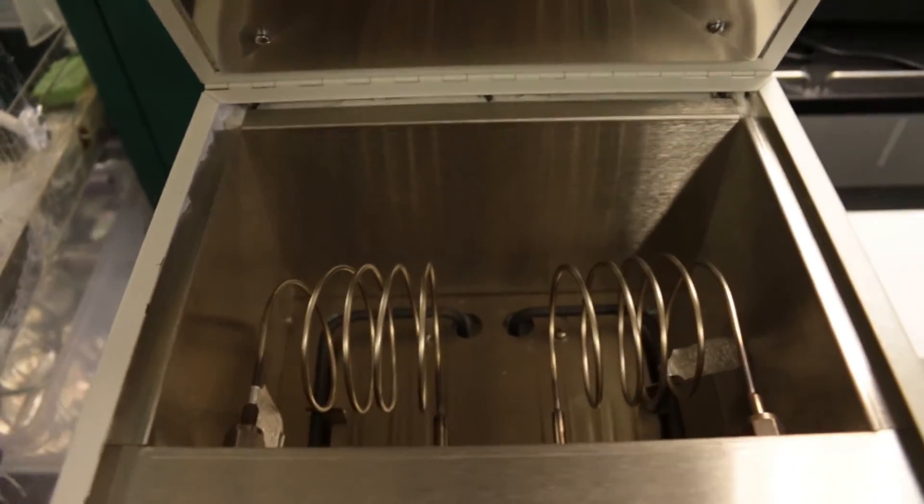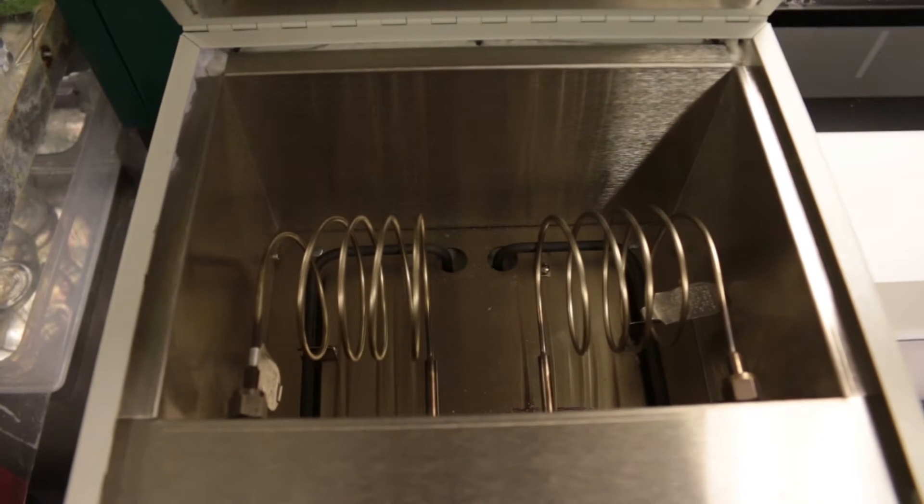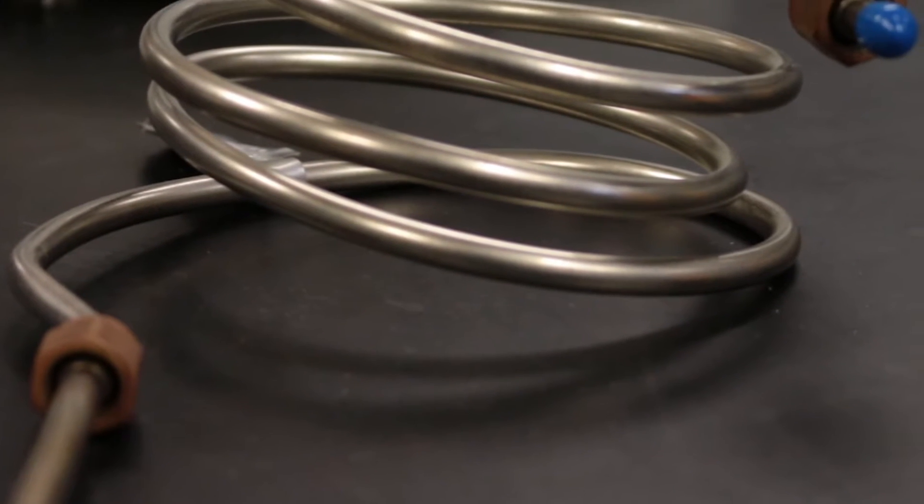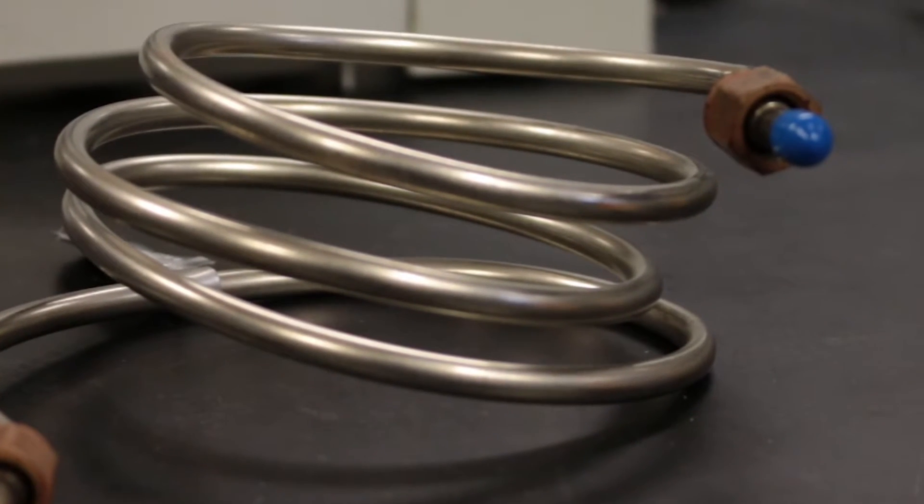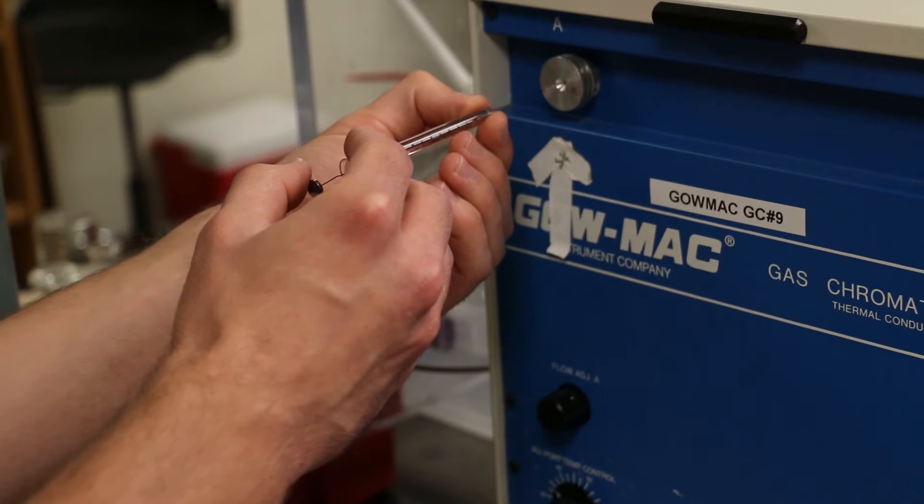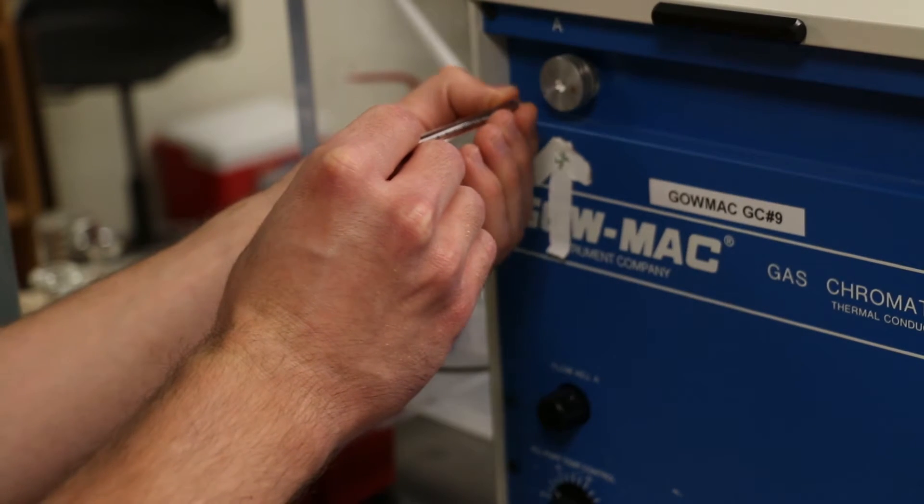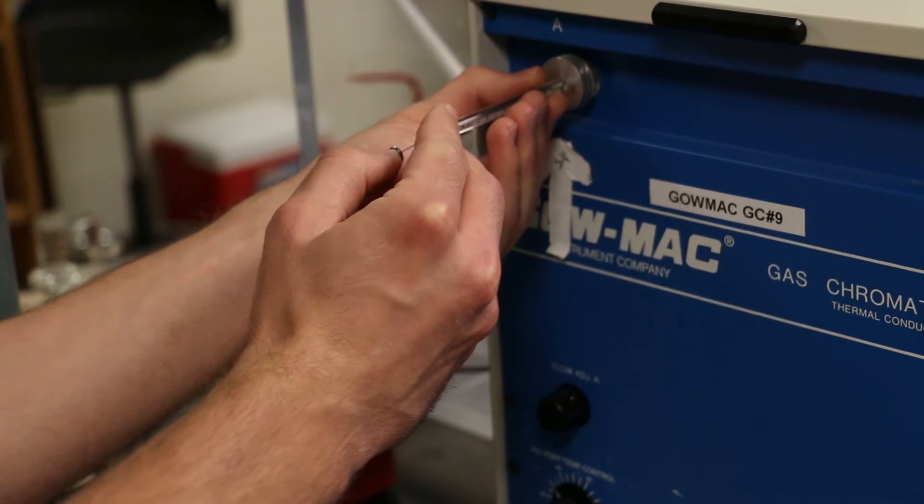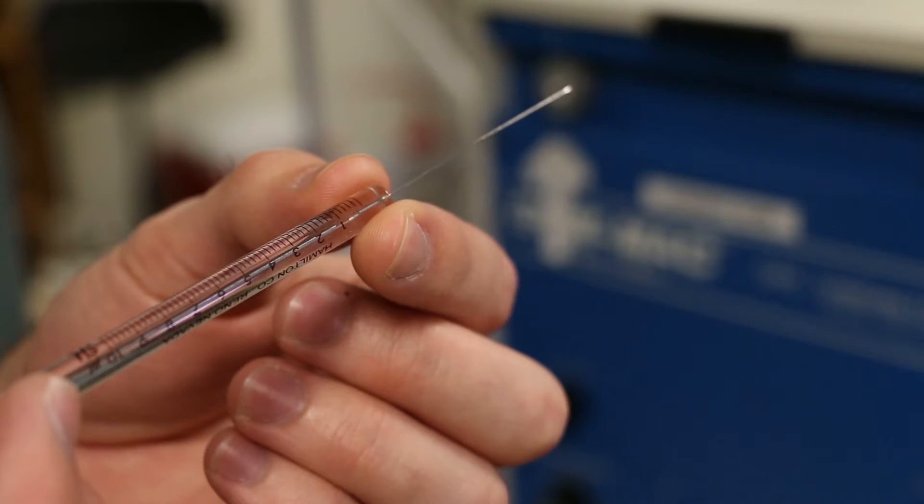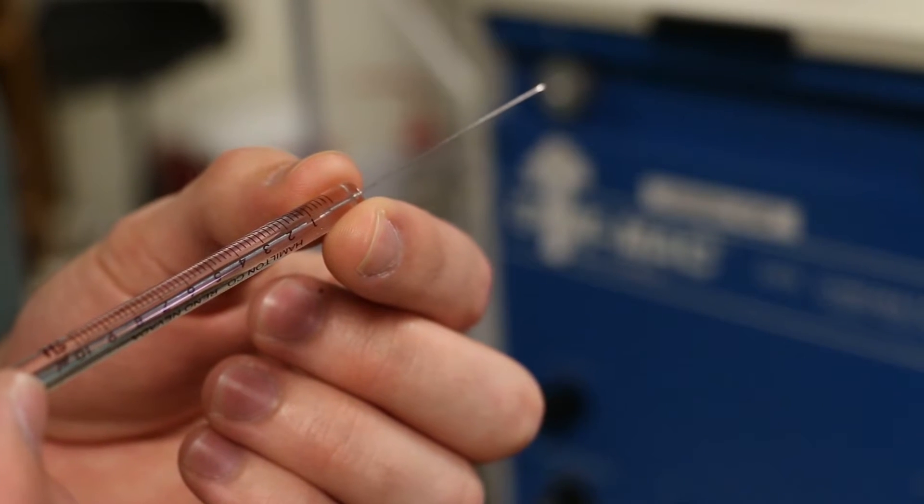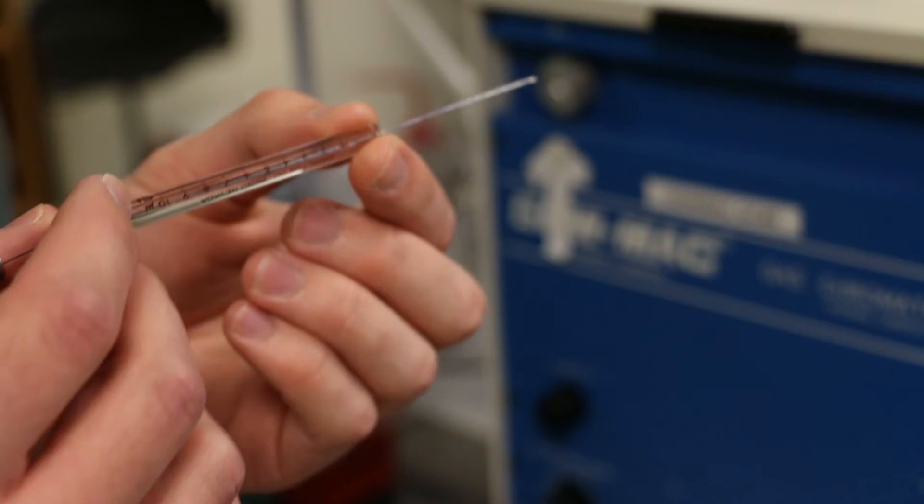The GC has a built-in detector that detects compounds as they leave the column and sends the signal from the detector to the integrator. A microliter syringe is used to introduce the sample through an injection port onto the GC column. The microliter syringe is a delicate instrument and needs to be used precisely to obtain good results.